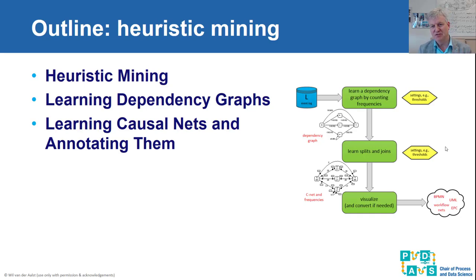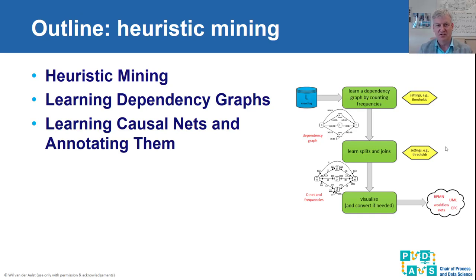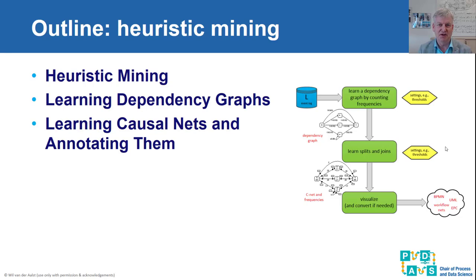The heuristic mining approach first takes an event log and converts it into a dependency graph. Once we have this dependency graph, using sliders we can decide how many connections to include. In the second step we learn the refined split and join behavior, which results in a causal net. Such a causal net can be converted to a Petri net and visualized as a Petri net, a BPMN model, or whatever notation you prefer. Let us first take a look at the heuristic miner in PROM so that you get a feeling of how this works in practice.